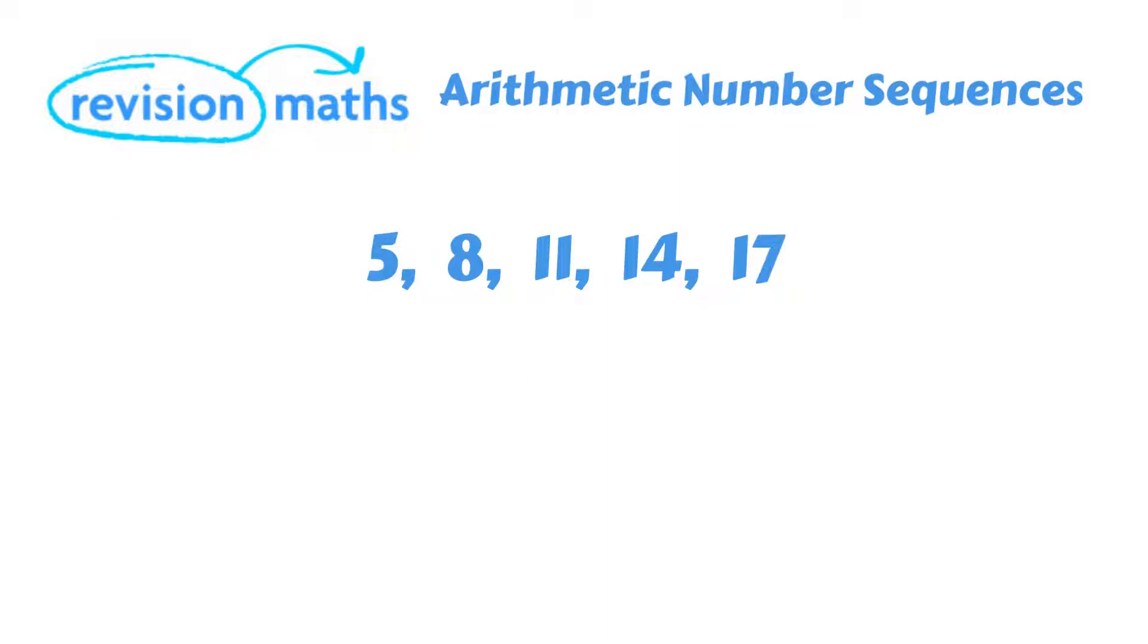So let's start with this number sequence, which contains the terms 5, 8, 11, 14 and 17. We use the word term to simply mean the number in the sequence.